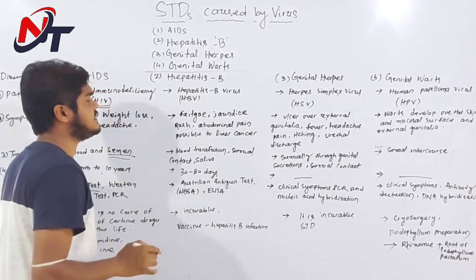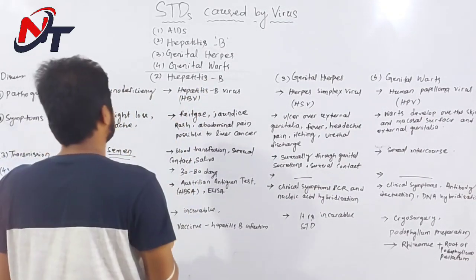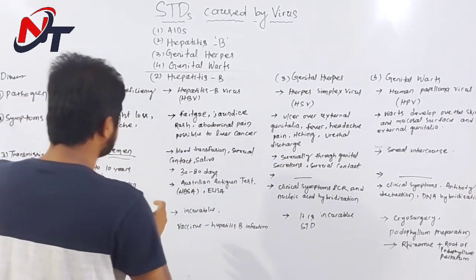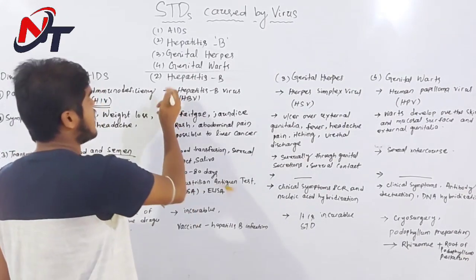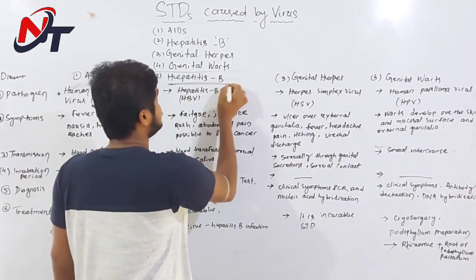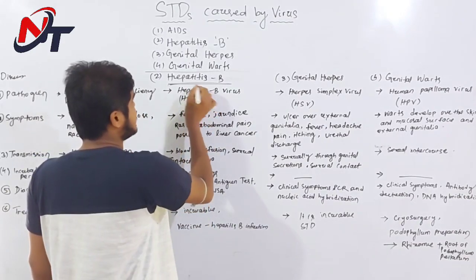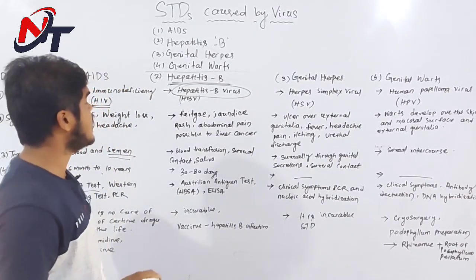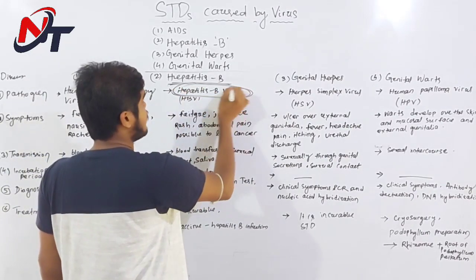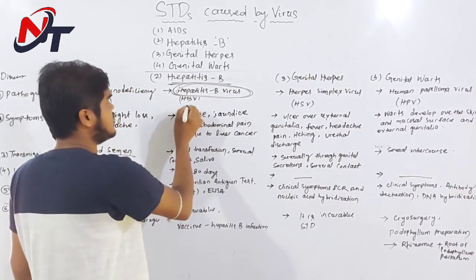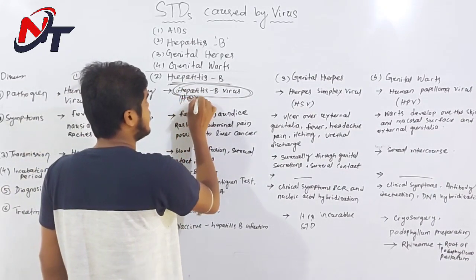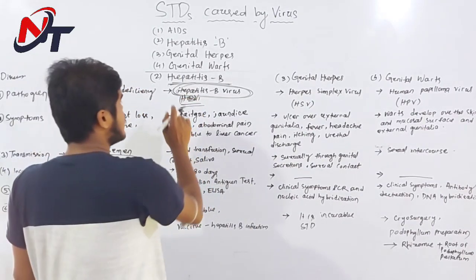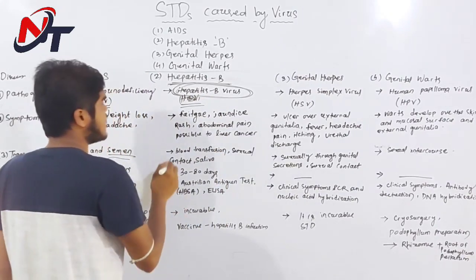Next is hepatitis B. Hepatitis B — how do the symptoms occur? Transmission, diagnosis, incubation period. The pathogen of hepatitis B is the hepatitis B virus, which we call HBV.